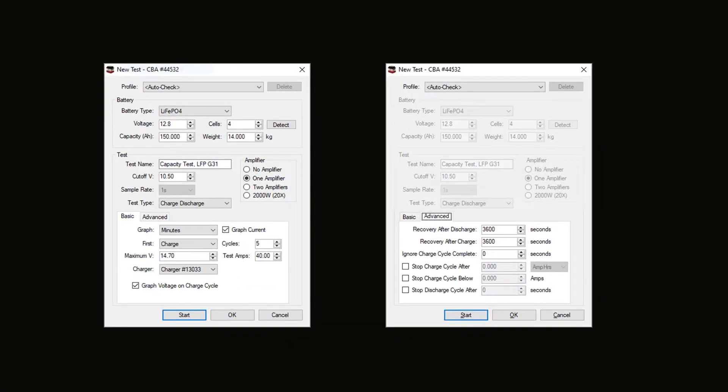Here are the settings. We're going to leave the top section, which is just generic information about the battery. We're going to use the cutoff voltage of 10.5. Our maximum voltage will be 14.7. We're doing five cycles because we're starting with charge. We'll do charge, discharge, charge, discharge, then charge, so it ends with a full battery. And then we're doing our test amps at 40. That's it, and then we'll see how it does.